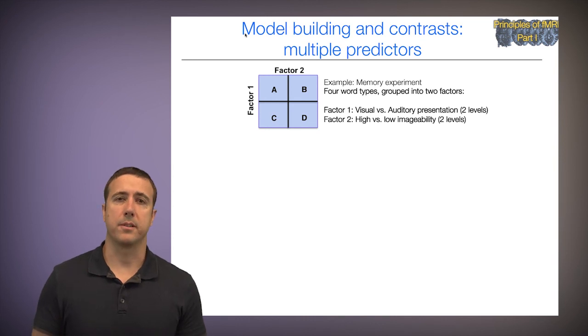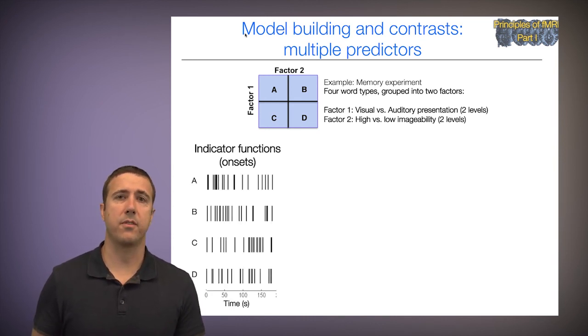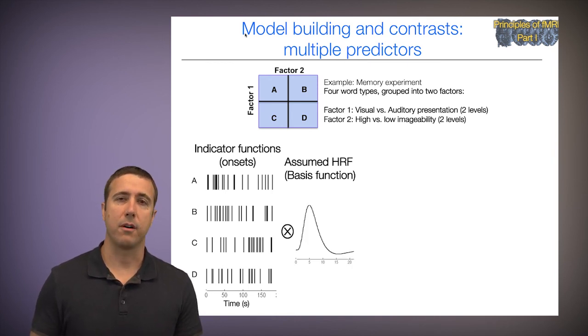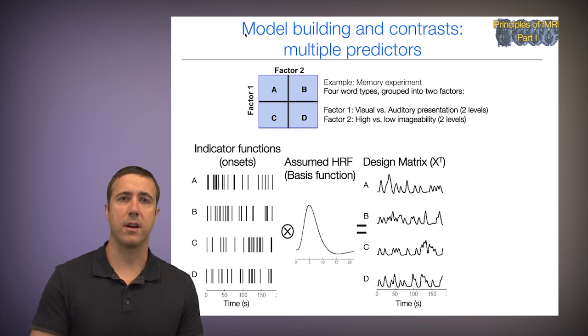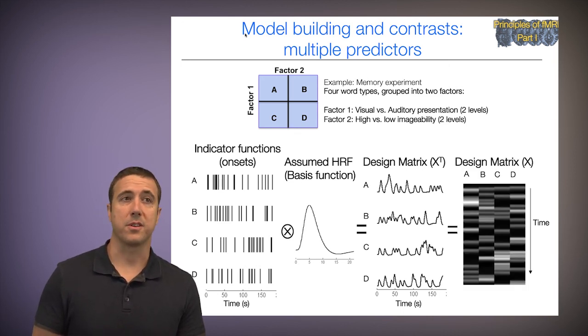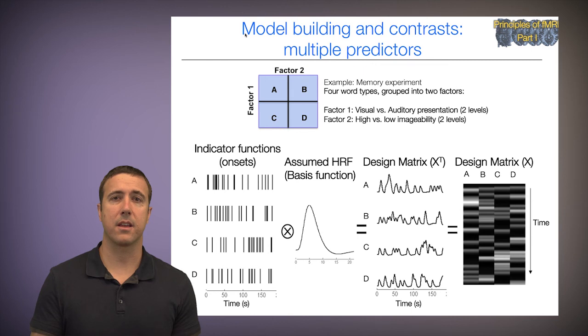So let's look at model building and contrasts with multiple predictors. We'll specify our indicator function for four different types of onsets. We can convolve it with the basis function, the assumed HRF. Then we get the design matrix. So this is exactly the case that we saw previously. And in general, if you're modeling any kind of factorial design in fMRI, you can simply create one regressor or one event type per cell.